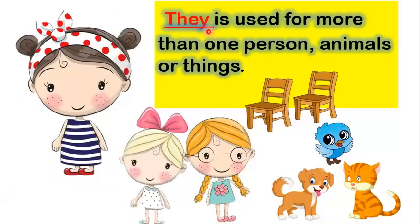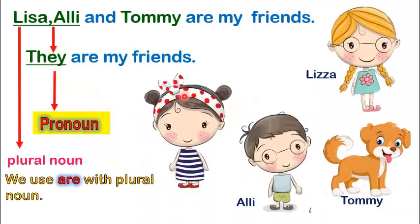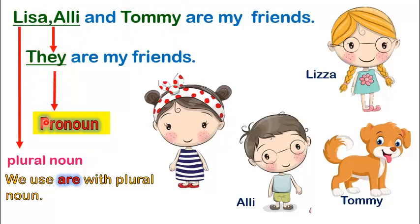They pronoun. They is used for more than one person, animals or things. They are my friends. Lisa, Ali and Tommy are my friends. We can also say, they are my friends. They refers to Lisa, Ali and Tommy. So, they is a pronoun that can be used for more than one person.